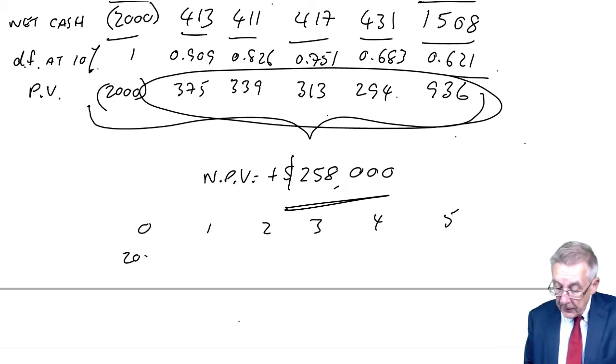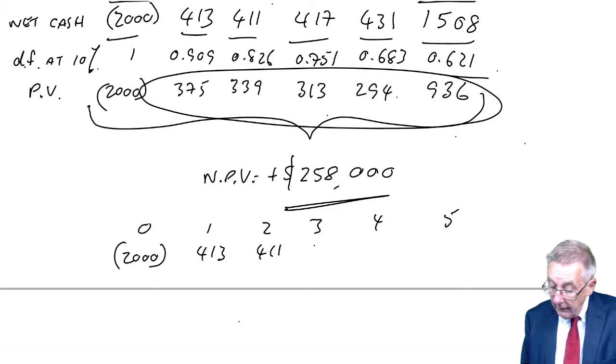It's the same project, so we'll take the same cash flows. Year 0, 1, 2, 3, 4, 5. The cash flows were 2000, 413, 411, 417, 431, 1508.